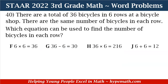Let's dive in to question number 40. There are a total of 36 bicycles in six rows at a bicycle shop. There are the same number of bicycles in each row. Which equation can be used to find the number of bicycles in each row? Is it F: six times six equals 36? G: 36 minus six equals 30? H: 36 times six equals 216? Or J: six plus six equals 12?